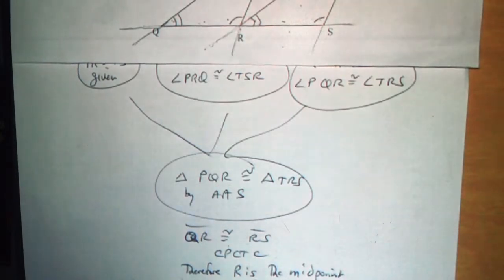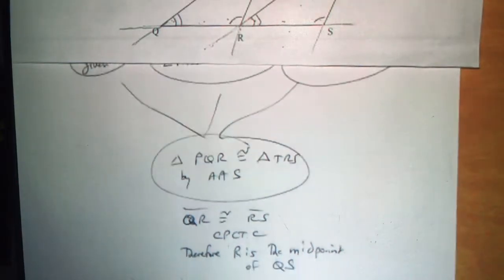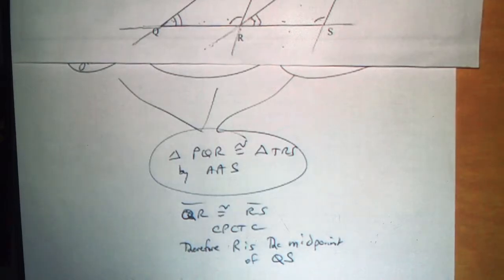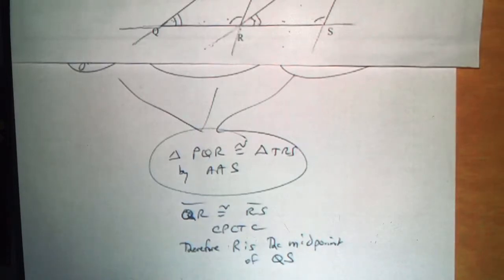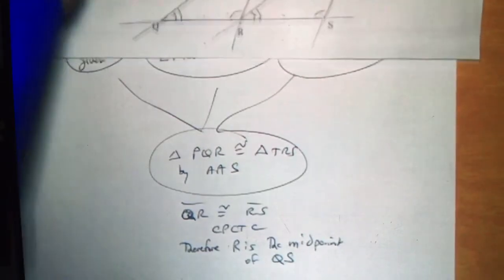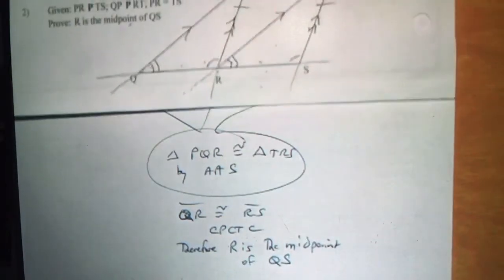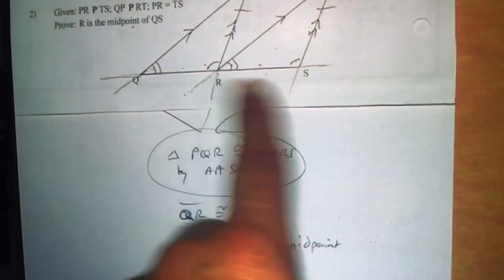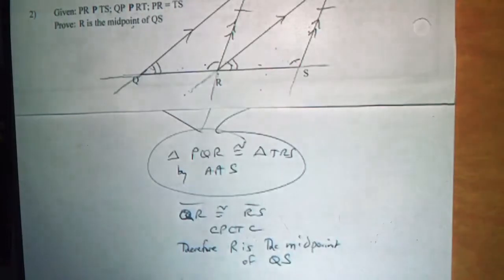Any questions on that? One question: when saying angle PRQ, could you just put angle R? No, because that could mean a lot of different things — there are too many things going on there. You actually have to write it out with all three letters. Any other questions?